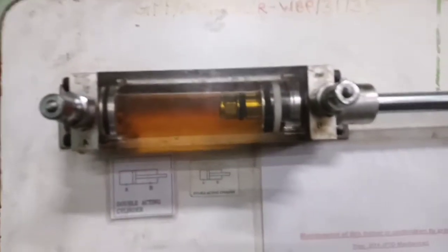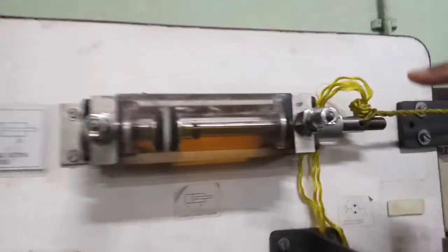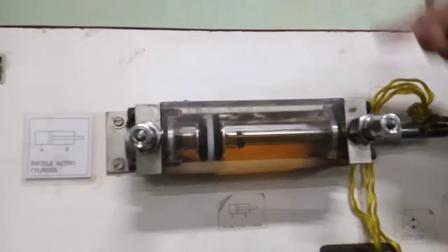As you can see, this is the linear actuator. Here, it is a double acting cylinder. You can see the symbol also. This is another actuator, double acting itself, having two ports.